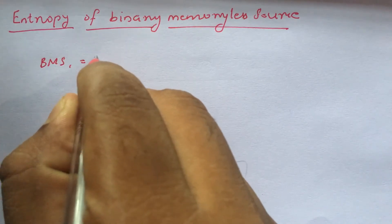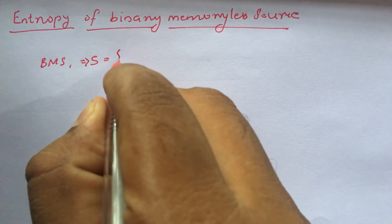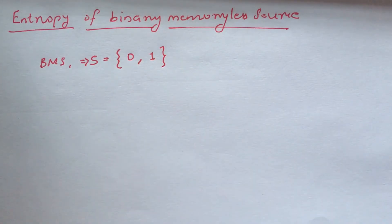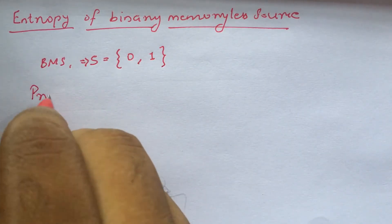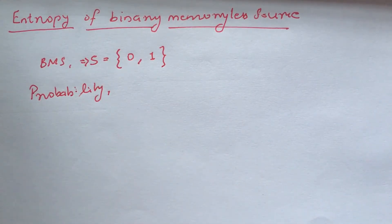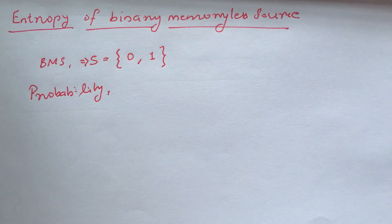The symbol set is given. For a binary source, the symbol set is {0, 1} — symbol 0 and symbol 1. The probability set will be explained. The specification is the probability of symbols — the probability to occur for each specific symbol. That probability will be explained for this source.